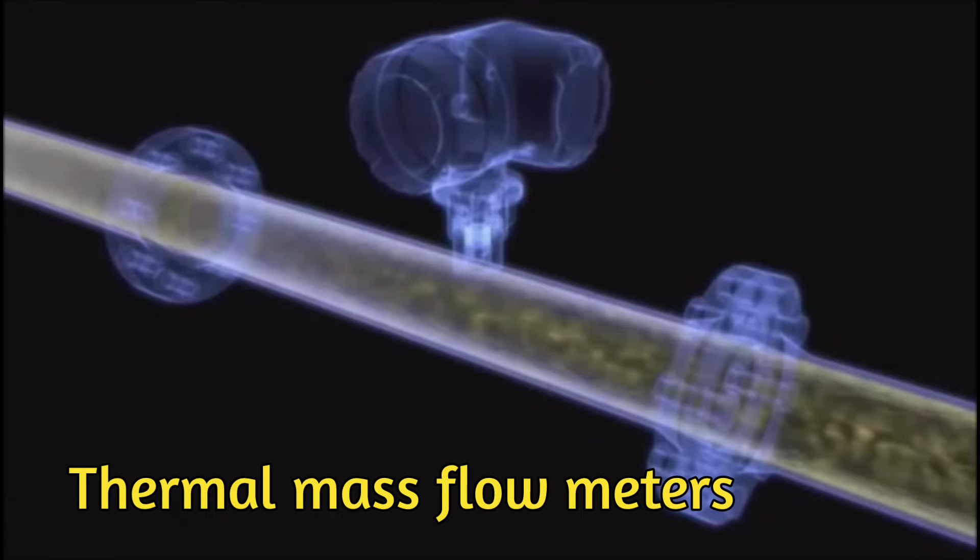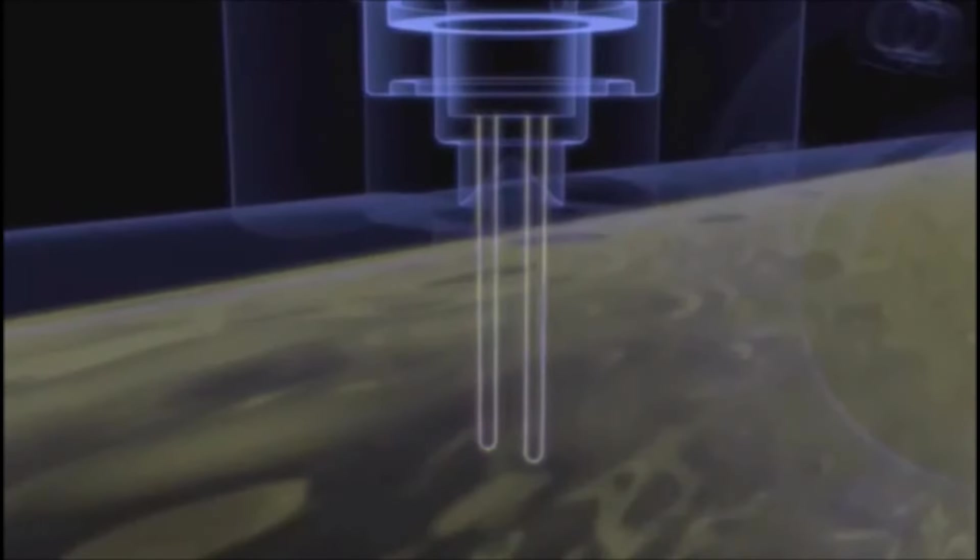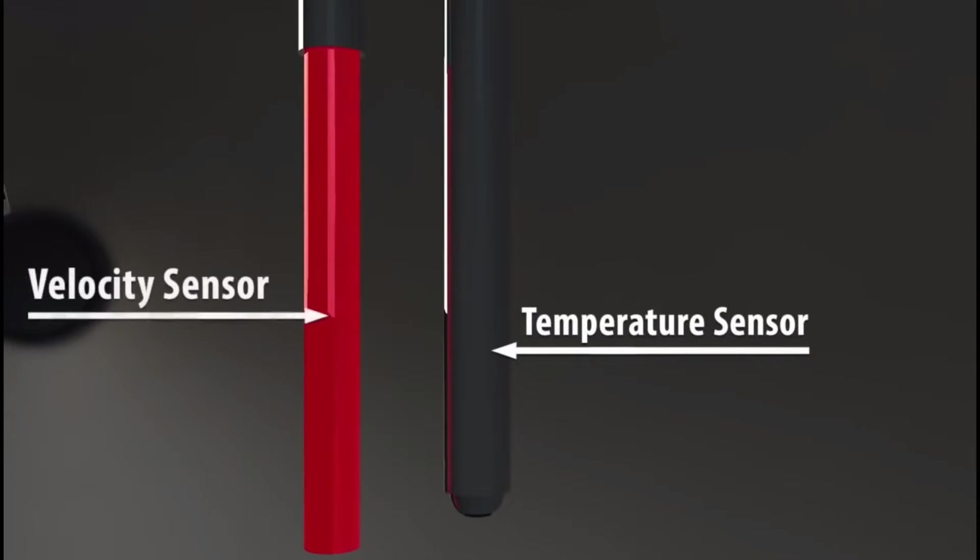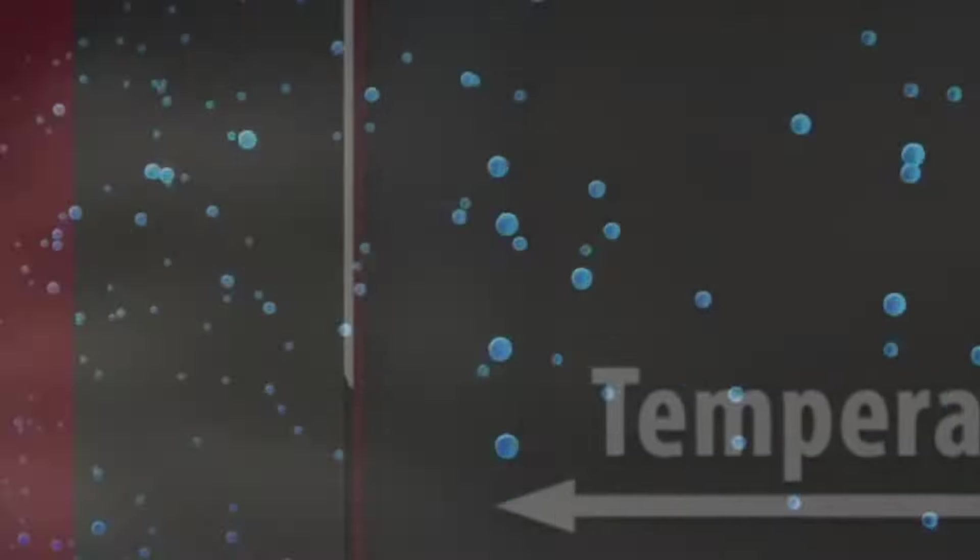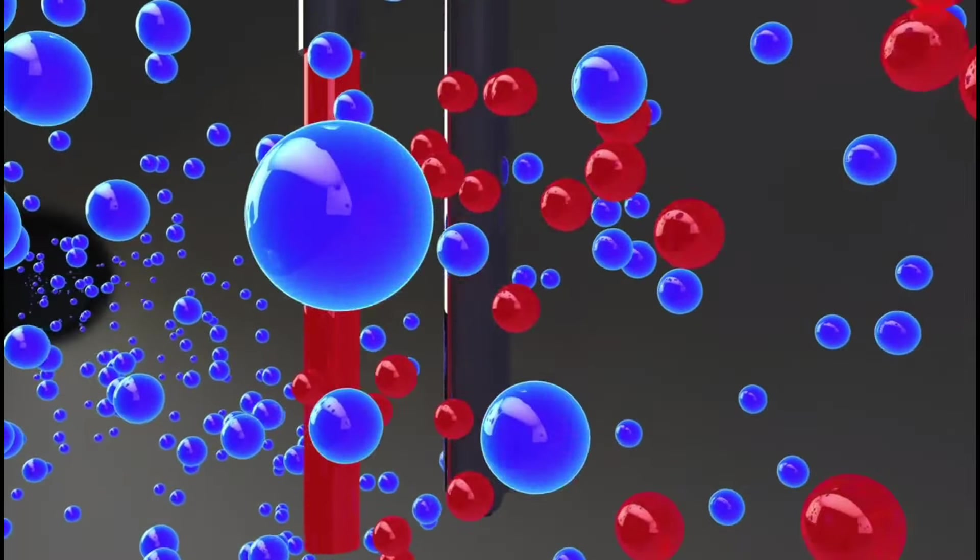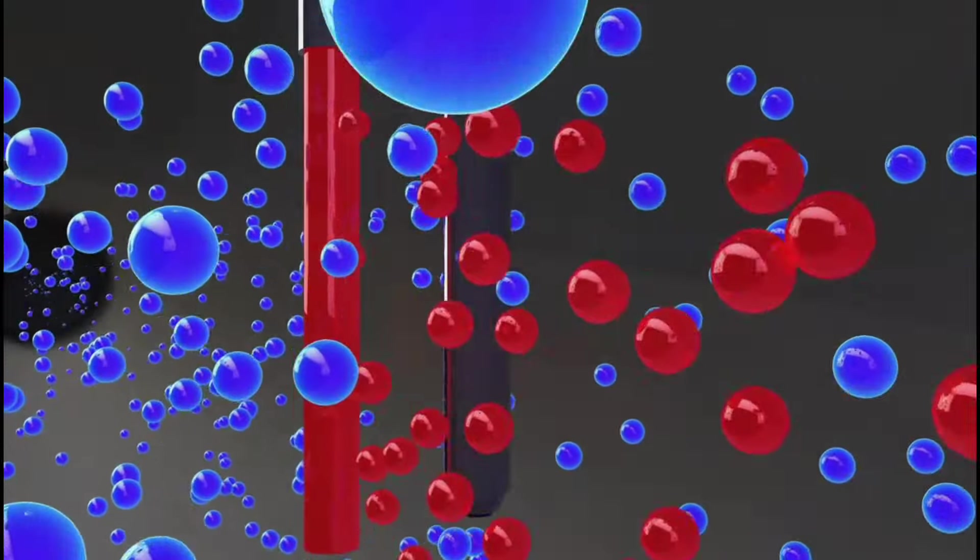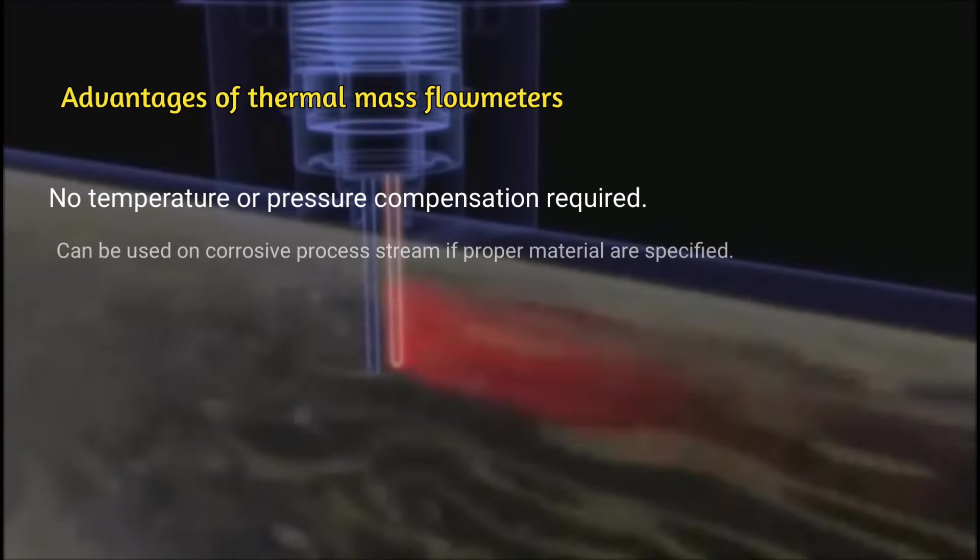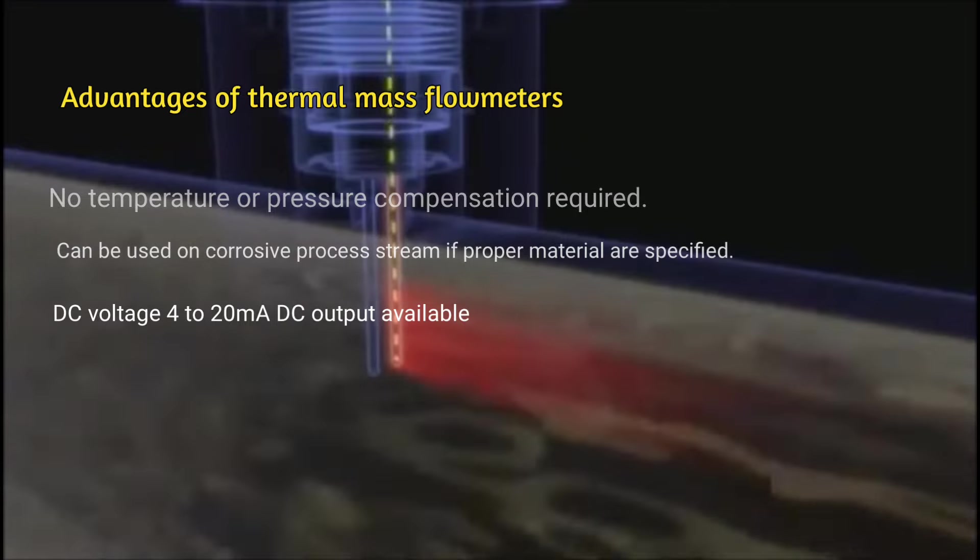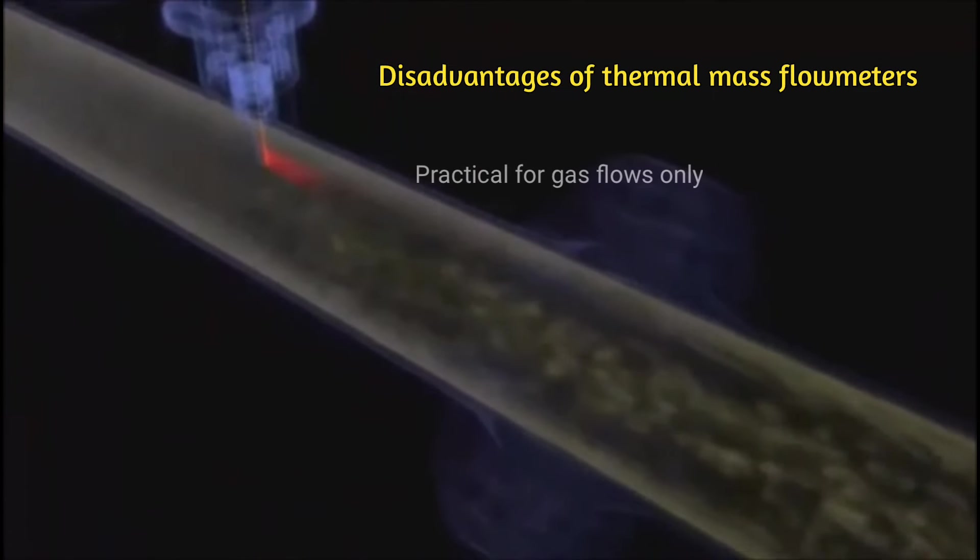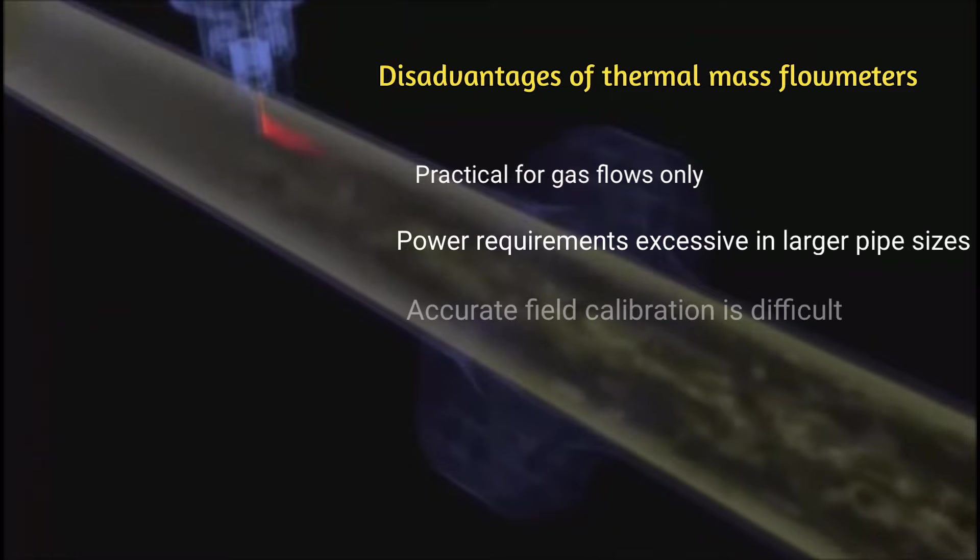Thermal mass flow meters operate by monitoring the cooling effect of a gas stream as it passes over a heated transducer. Gas flow passes over two transducers. The temperature transducer monitors the actual gas process temperature, whilst the self-heated transducer is maintained at a constant differential temperature by varying the current through it. The greater the mass flow passing over the heated transducer, the greater the current required to keep a constant differential temperature. The measured heated current is therefore a measure of the gas mass flow rate. Advantages: no temperature or pressure compensation required, can be used on corrosive process stream if proper materials are specified, DC voltage or 4 to 20 milliampere output available. Disadvantages: practical for gas flows only, power requirements excessive in large pipe sizes, accurate field calibration is difficult.